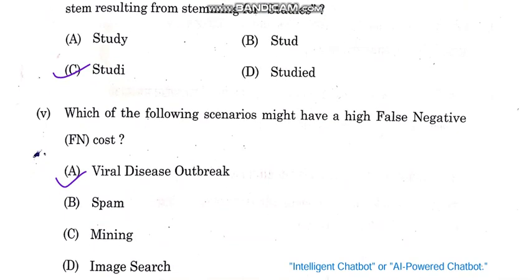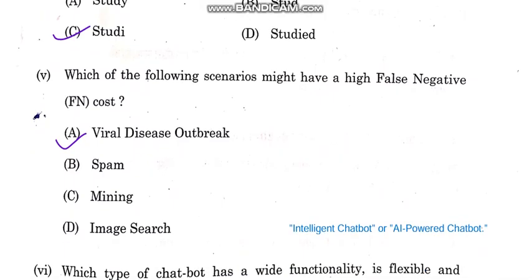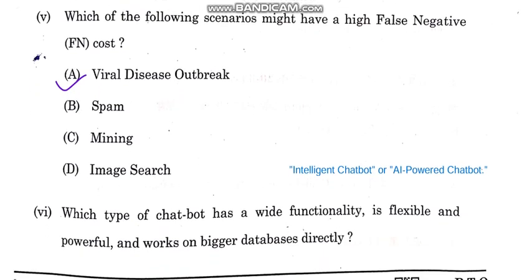Which of the following scenarios might have a high false negative cost? The correct answer is A option: viral disease outbreak.